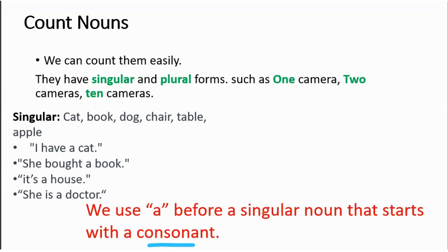What's the rule? If you look at these nouns again, all of them are starting with a consonant: cat starts with c, book with b, house with h, doctor with d. So if a singular noun starts with a consonant, we put 'a' before that singular noun.